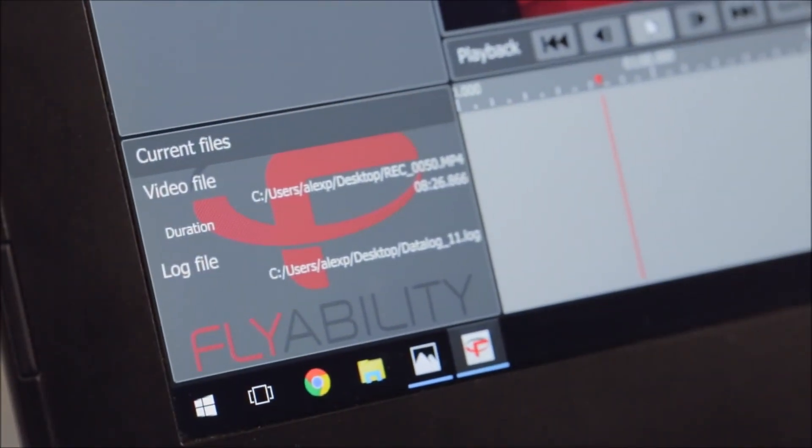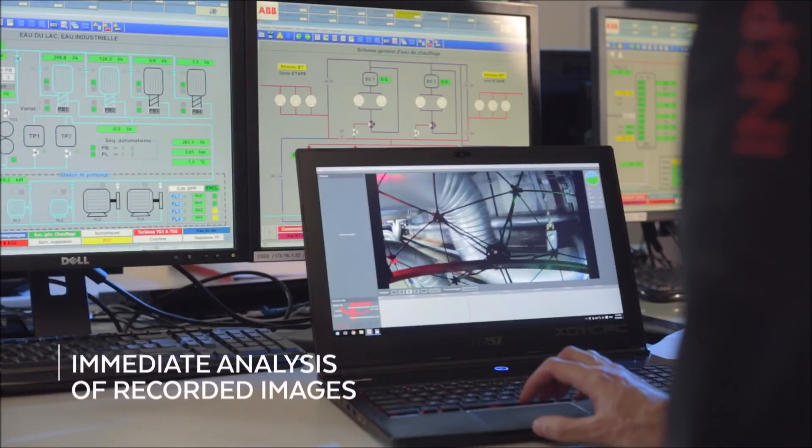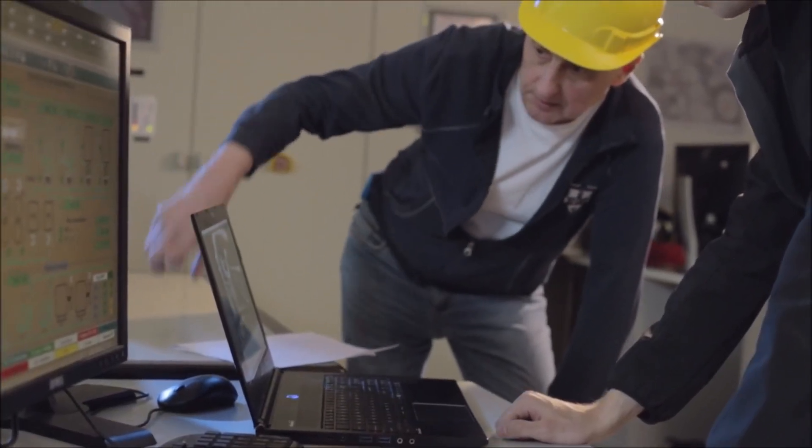Stored on an SD card on-board Elios, the data from the flight can be immediately reviewed and analyzed by your team and exported to include in your reports.